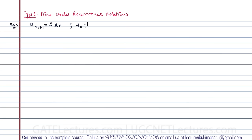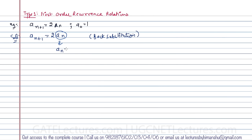Just for revision purposes, let me first solve this recurrence relation by back substitution. We have a(n+1) = 2·a(n). To find the value of a(n), wherever we have n+1, substitute n — so a(n) becomes 2·a(n-1).